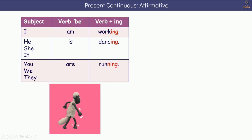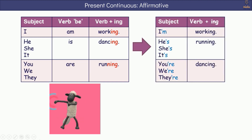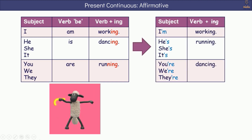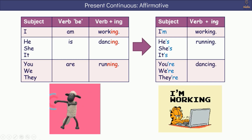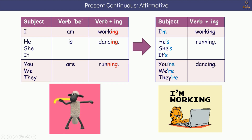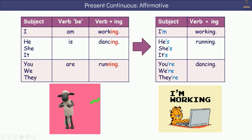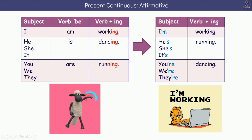We can also use contractions in affirmative sentences. For example: I'm working. He's running. She's running. It's running. You're dancing. We're dancing. They're dancing.